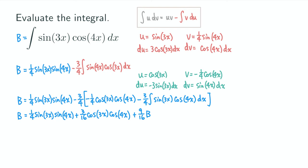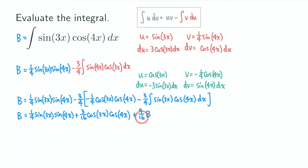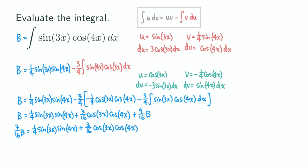Now our goal is to find what b equals. We subtract 9/16 b from both sides to isolate b on the left. So we get 1·b minus 9/16 b = 7/16 b, which equals 1/4 sine 3x sine 4x plus 3/16 cosine 3x cosine 4x. Then we multiply both sides by the reciprocal of 7/16, which is 16/7.